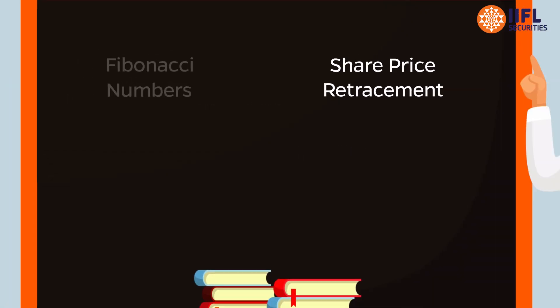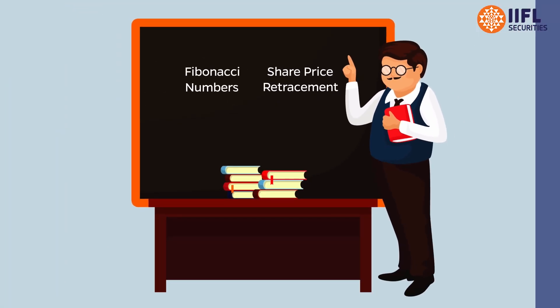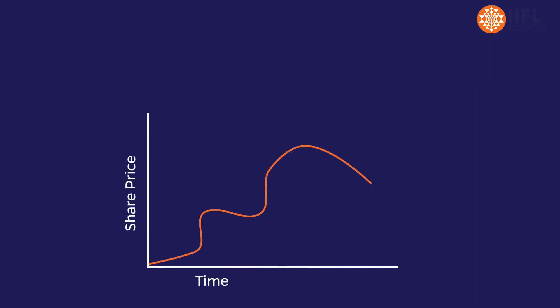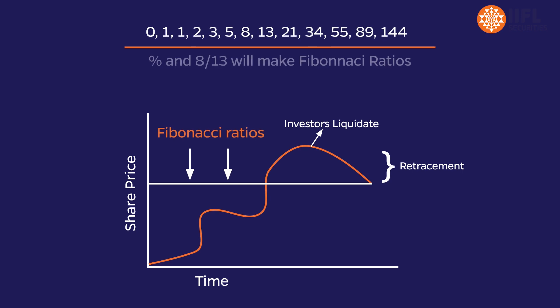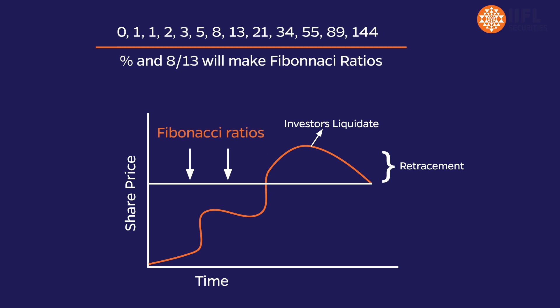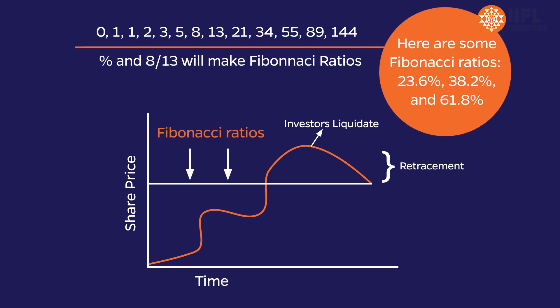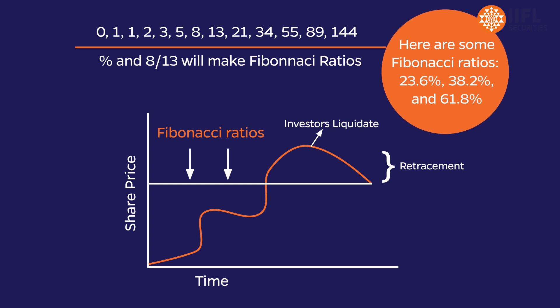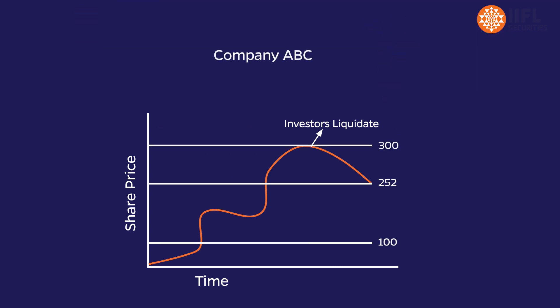So what do these concepts have to do with each other? Certain investors believe retracement happens along Fibonacci ratios. Fibonacci ratios are simply ratios of numbers in this string. Here are some Fibonacci ratios: 23.6%, 38.2%, and 61.8%.